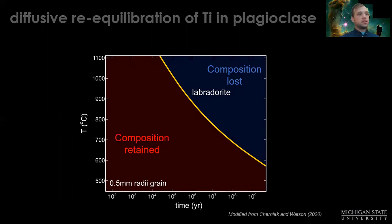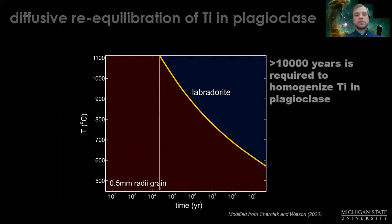Our calculations of the temperature of this system is about 1,150 degrees Celsius, which means our crystals must have been in a fresh batch of magma for at least 10,000 years to result in the homogeneous compositions that we see.